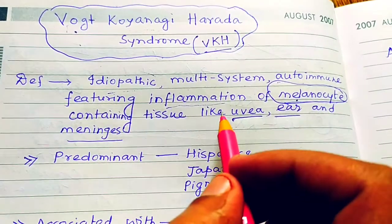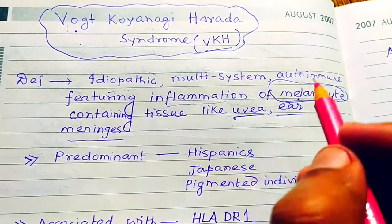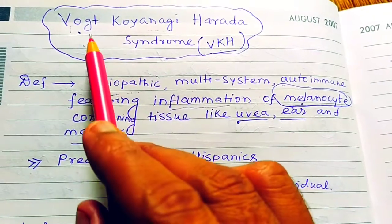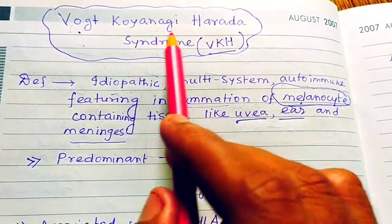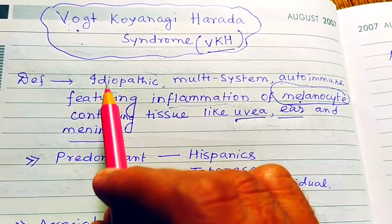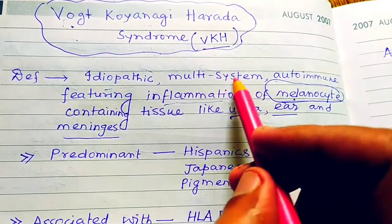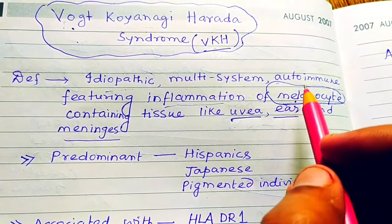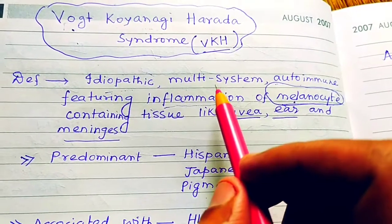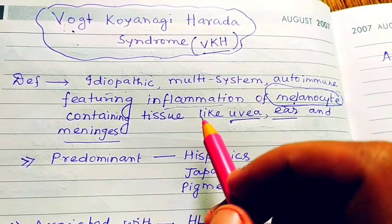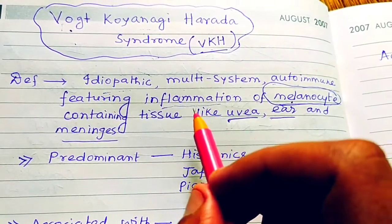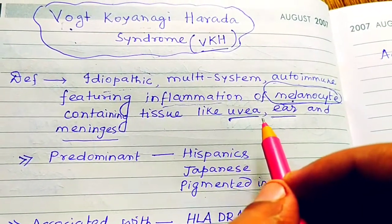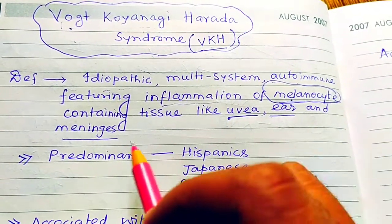So meninges, uvea, and ear will all be affected. VKH syndrome is an idiopathic multi-system autoimmune disease featuring inflammation of melanocyte-containing tissue like the uvea, ear, and meninges.